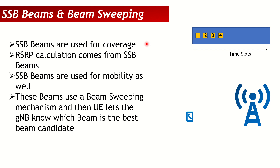Once you get the RSRP from the SSB, you try to attach to the cell if the RSRP is good enough. During mobility, when you need to move from one cell to another — like an A3 event — the RSRP of the neighbor cell and the serving cell also comes from the SSB, specifically the SSS part.